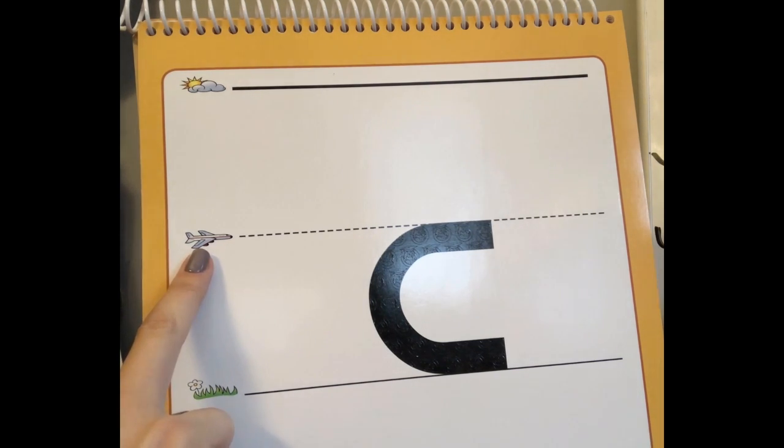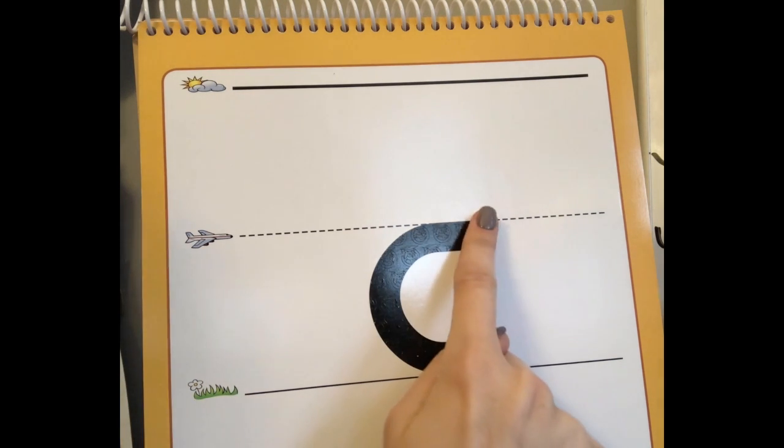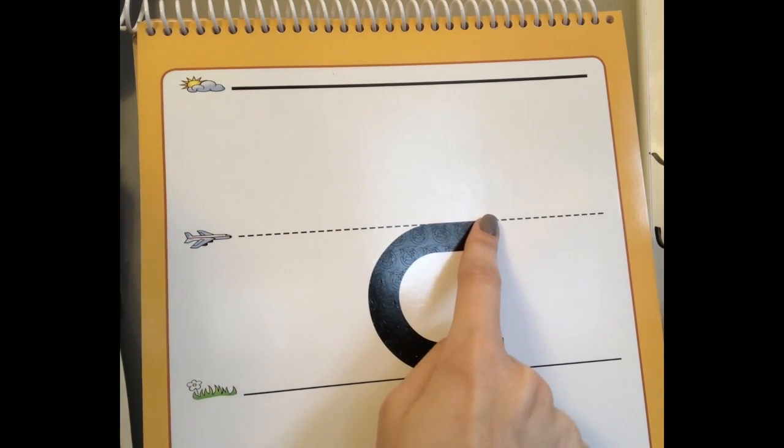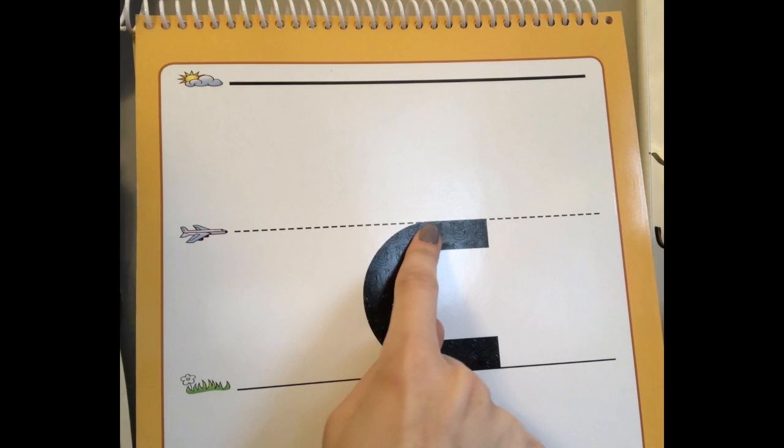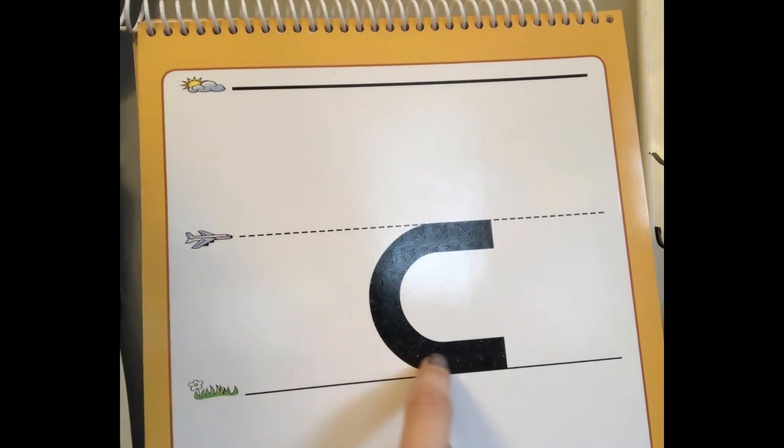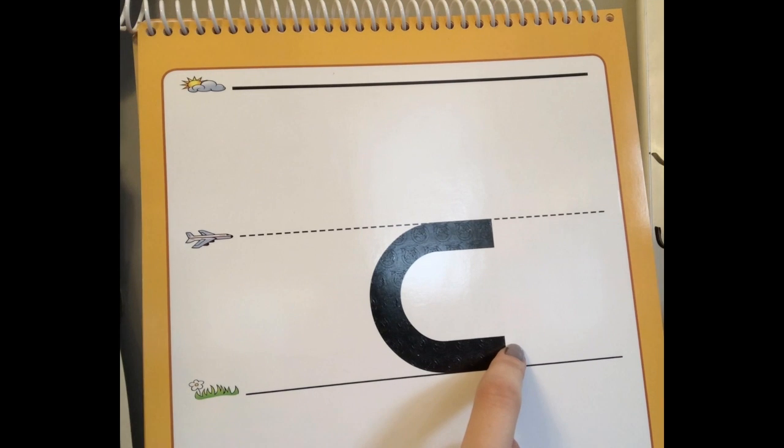Okay, so let's see how to write a lowercase C. We're gonna point to the plain line, start to fly backwards, and go down and around to the grass line. C, cat, k.